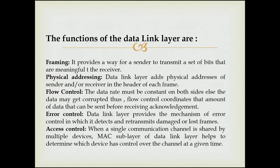Framing: it provides a way for a sender to transmit a set of bits that is meaningful to the receiver. Physical addressing: the Data Link layer adds a physical address of the sender or receiver in the header of each frame. Flow control: the data rate must be constant on both sides, else the data may get corrupted; flow control coordinates the amount of data that can be sent before receiving acknowledgement. Error control: the Data Link layer provides a mechanism of error control in which it detects and retransmits damaged or lost frames. Access control: when a single communication channel is shared by multiple devices, the MAC layer of the Data Link layer helps determine which device has control over the channel at a given time.